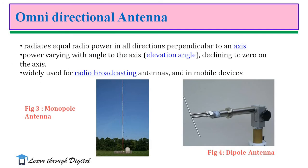Next, we are going to talk about omnidirectional antenna. Omnidirectional antenna is described by the omnidirectional radiation pattern. It is a class of antenna which radiates equal amount of power in all directions perpendicular to an axis, with power varying with angle to the axis — that is, elevation angle declining to zero on its axis. The radiation pattern is often described as doughnut-shaped. The main difference between isotropic radiator and omnidirectional antenna is that in the omnidirectional antenna the radiation pattern is doughnut-shaped, whereas in the isotropic radiator the radiation pattern is a sphere.